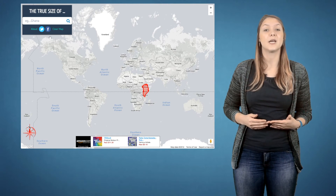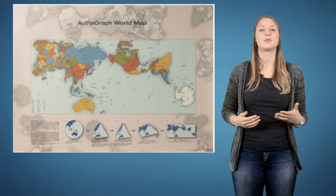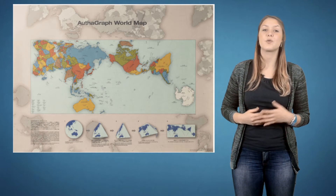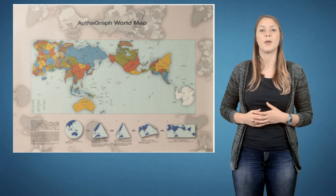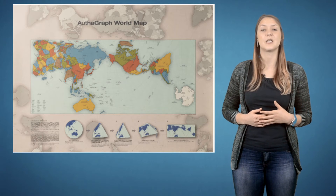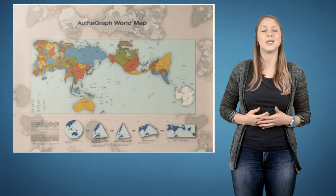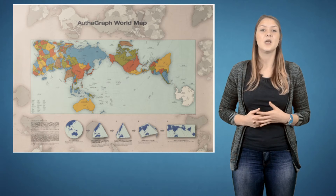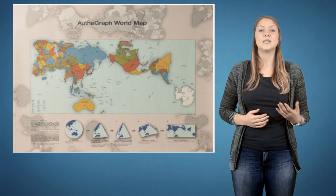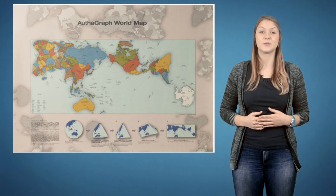while downplaying the size of those near the equator. Tip 3 is the Autograph world map. Autograph developed an original world map which represents all oceans and continents including Antarctica, which has been neglected in many existing maps, in substantially proper sizes. These fit in a rectangular frame without interruptions and overlaps.